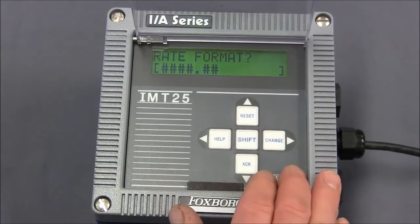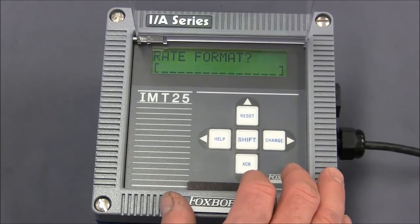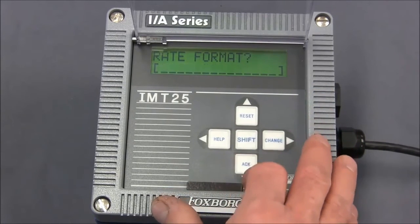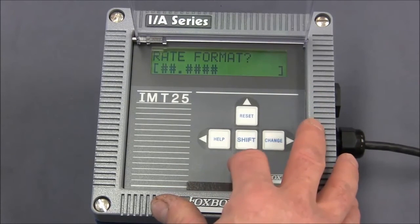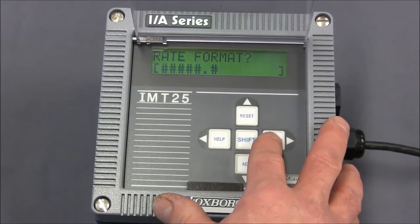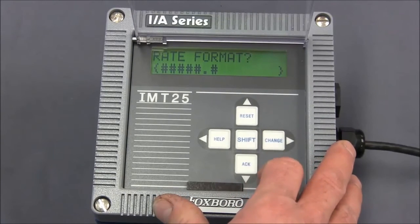We'll do shift and change. This time the entire line will flash and we will hit the down arrow key until we get one position to the right. Hit the right arrow to lock that in.